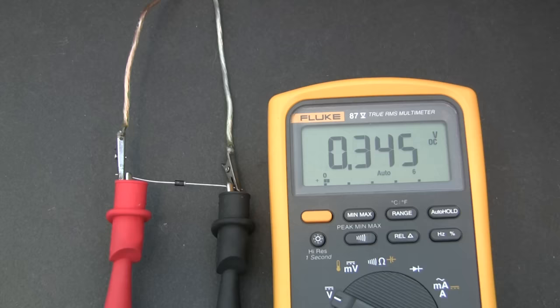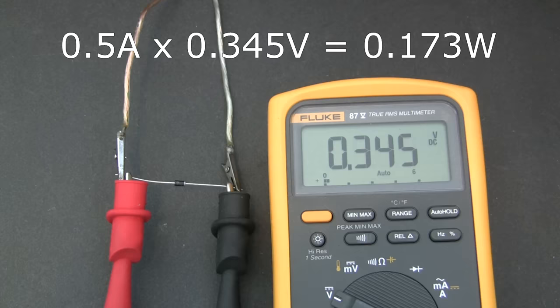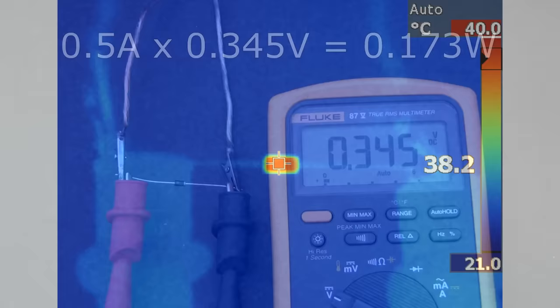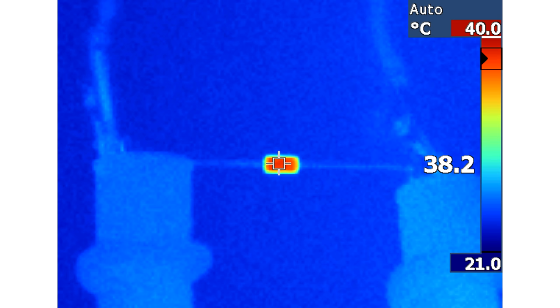Now let's try the same experiment with the 1N5817 Schottky diode. We've got the same 500 milliamps flowing through it, but the forward voltage drop is only 0.345 volts instead of 0.832 volts. 0.5 amps multiplied by 0.345 volts gives 173 milliwatts of heat instead of the 416 milliwatts we were getting with the silicon diode. This results in a lower temperature of 38 degrees instead of 54 degrees. So basically Schottky diodes are a more efficient way to block the reverse flow of current.